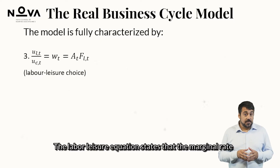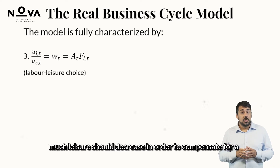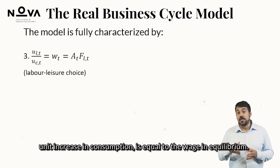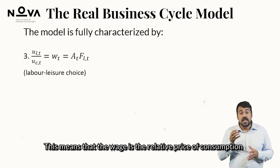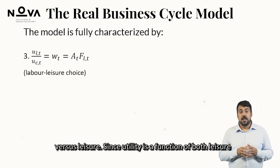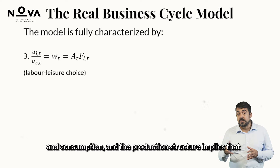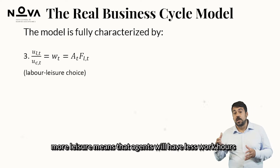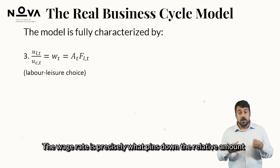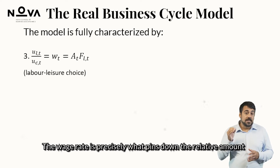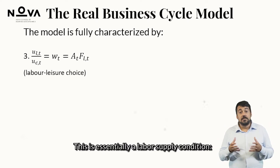The labor-leisure equation states that the marginal rate of substitution between labor and consumption — how much leisure must decrease to compensate for a unit increase in consumption — equals the wage in equilibrium. This means the wage is the relative price of consumption versus leisure. Since utility is a function of both leisure and consumption, and more leisure means fewer work hours and smaller earnings, there is a trade-off between the two. The wage rate pins down the relative amount of leisure versus consumption in equilibrium. This is essentially a labor supply condition.